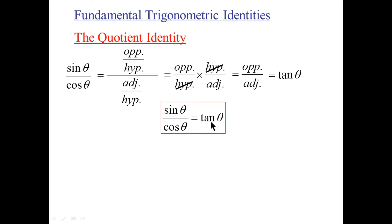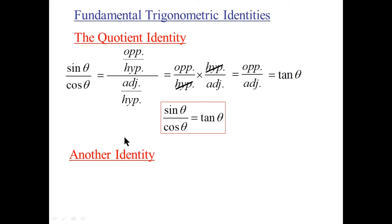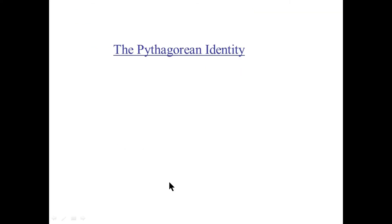It's true for all theta, except for the theta that makes cosine of theta equal to zero. It's true for infinite numbers of theta. Here's another identity: tan squared x plus 1 equals secant squared x. The next fundamental identity is called the Pythagorean identity.